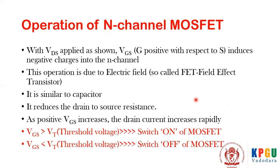This is similar to what happens in a capacitor. It reduces the drain-to-source resistance when positive VGS is applied. As VGS increases, drain current increases. In short, when VGS is greater than VT (threshold voltage) the MOSFET is turned on, and when VGS is less than VT the MOSFET is turned off.